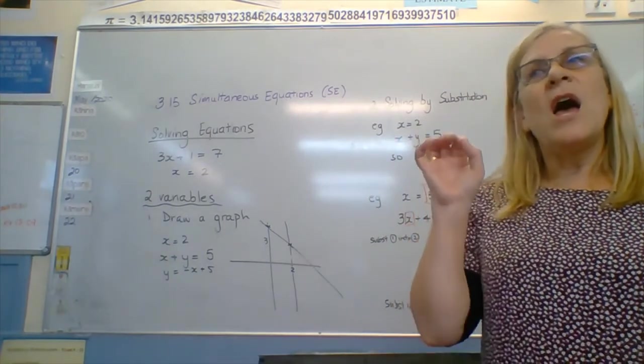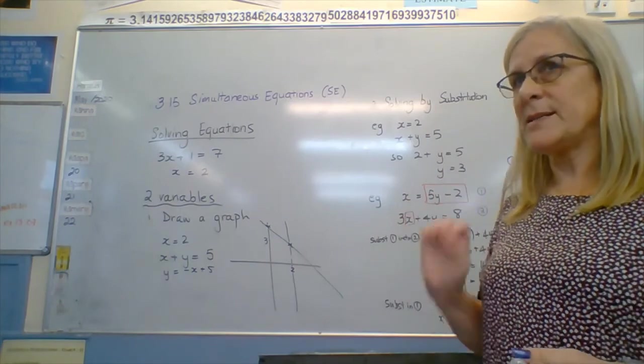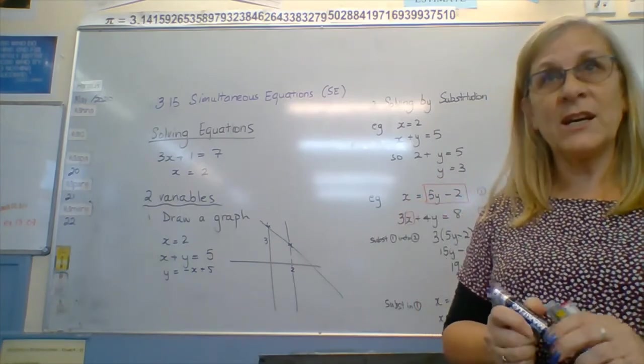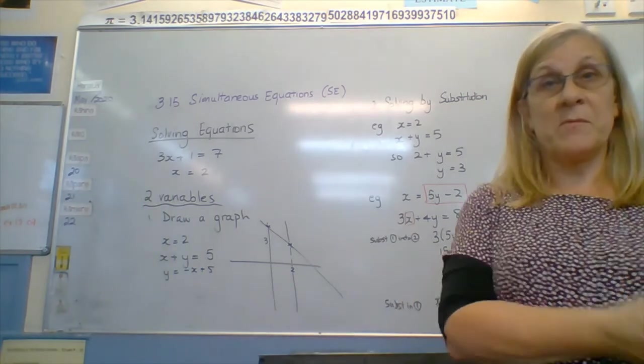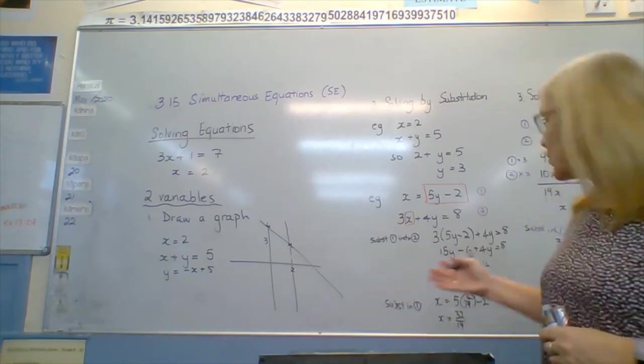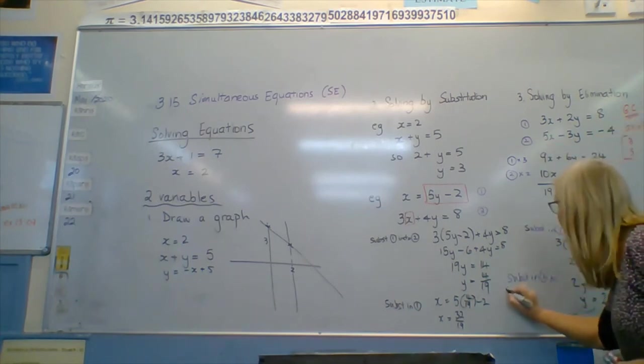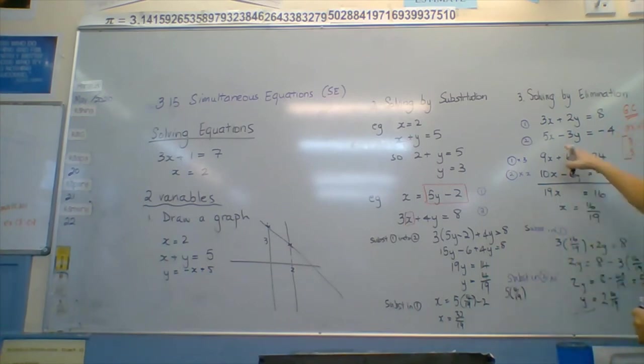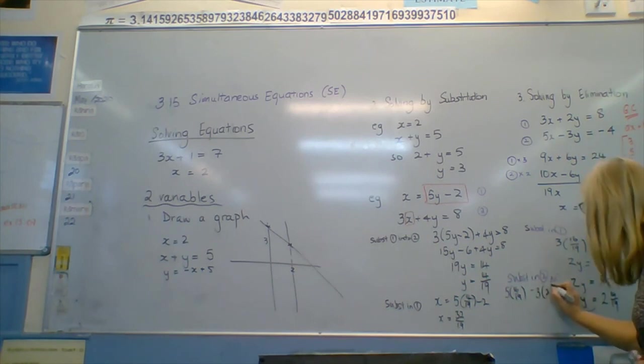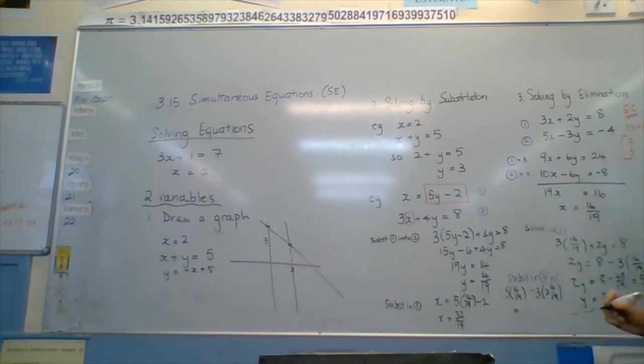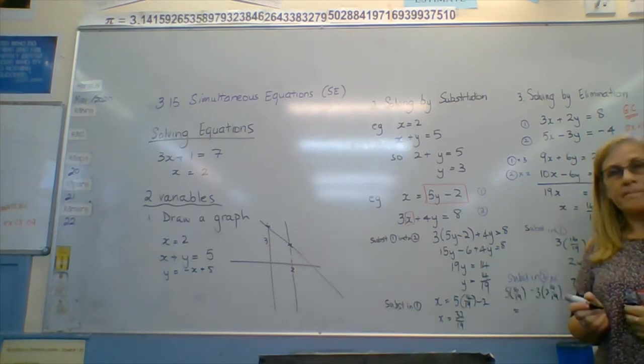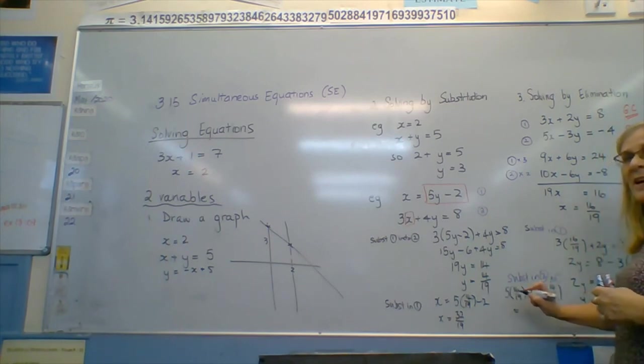My last step in any solving is to check. Because if I don't check, I'm not using the answers that I've actually been provided with in the test. My way to check is to make sure that I use these two numbers back in whatever equation I didn't use here. So I'm going to substitute into 2. I'm going to put 5 16 19ths into my calculator, and then I'm going to minus 3 times 2 and 14 19ths. And I'm going to hope that that gives me negative 4.